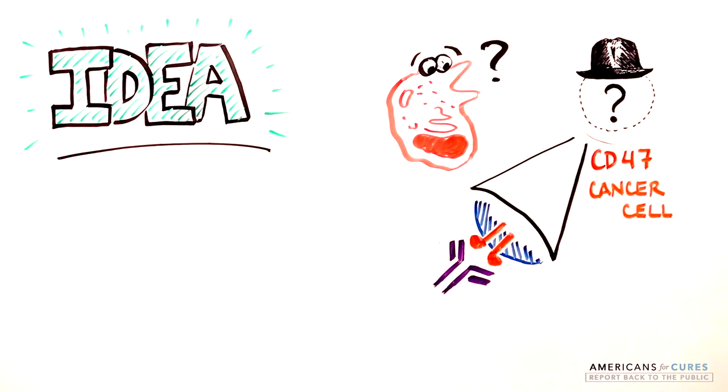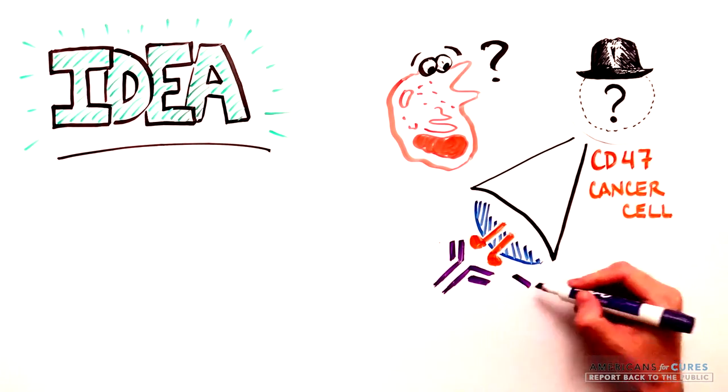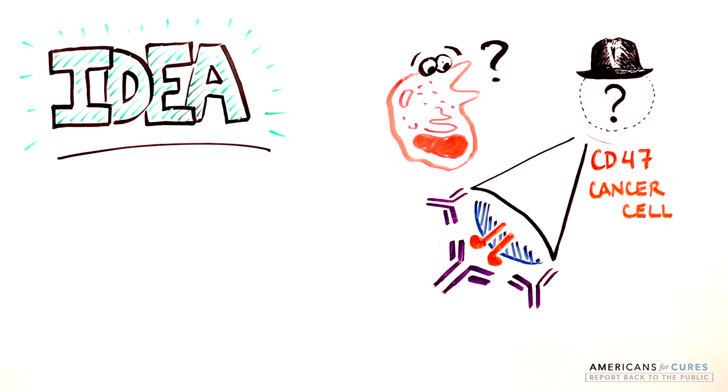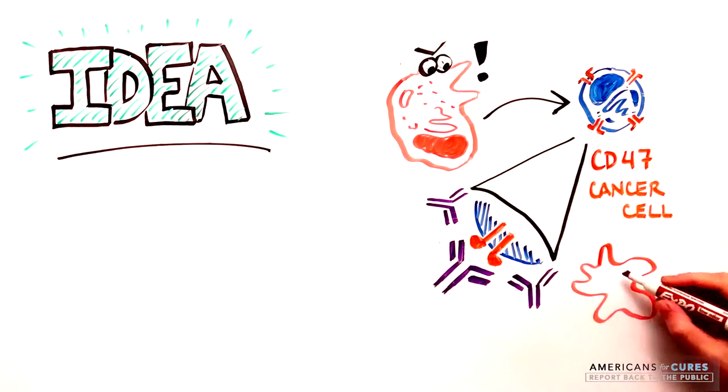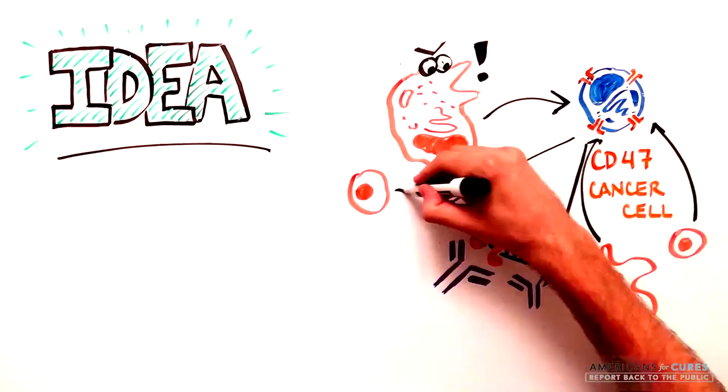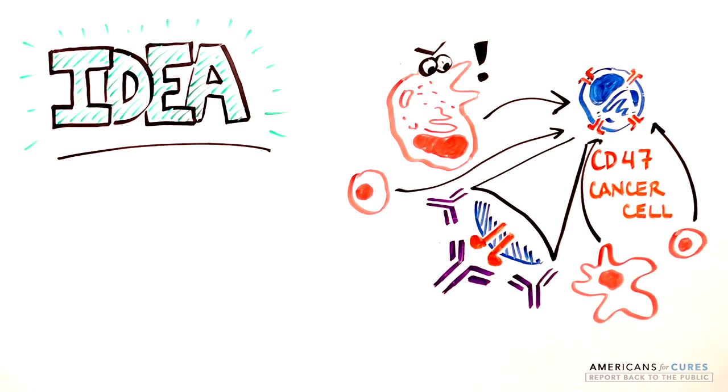When the CD47 antibody is present, it would bind to CD47 on the surface of cancer cells, removing the invisibility cloak and alerting the immune system that something is wrong with the CD47 expressing cancer cell and that it should be destroyed.